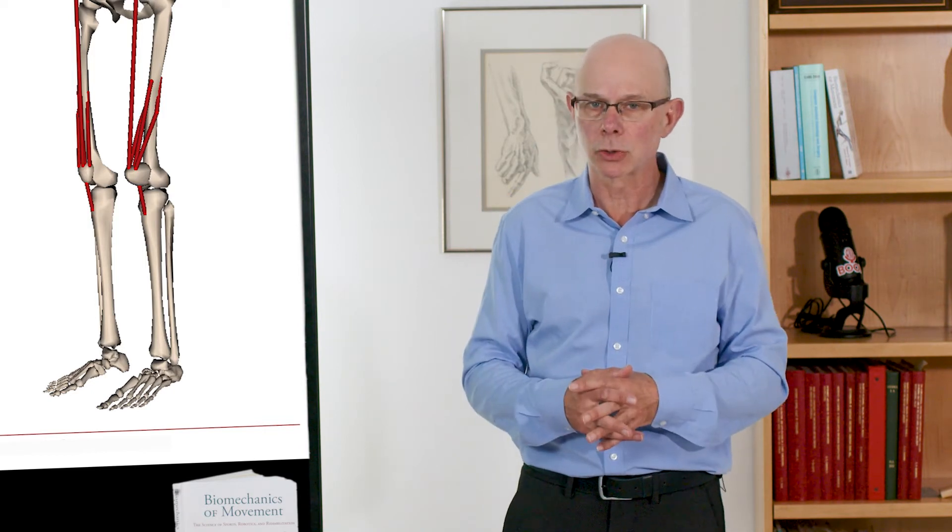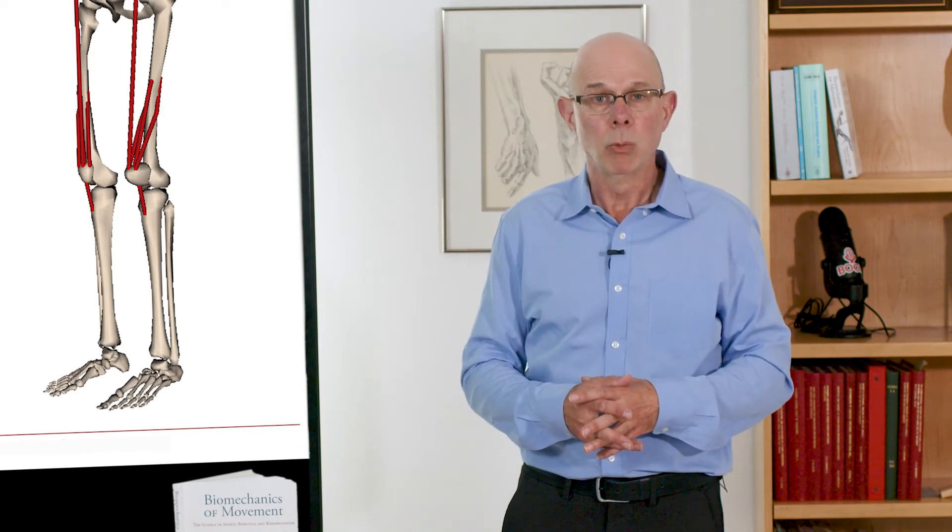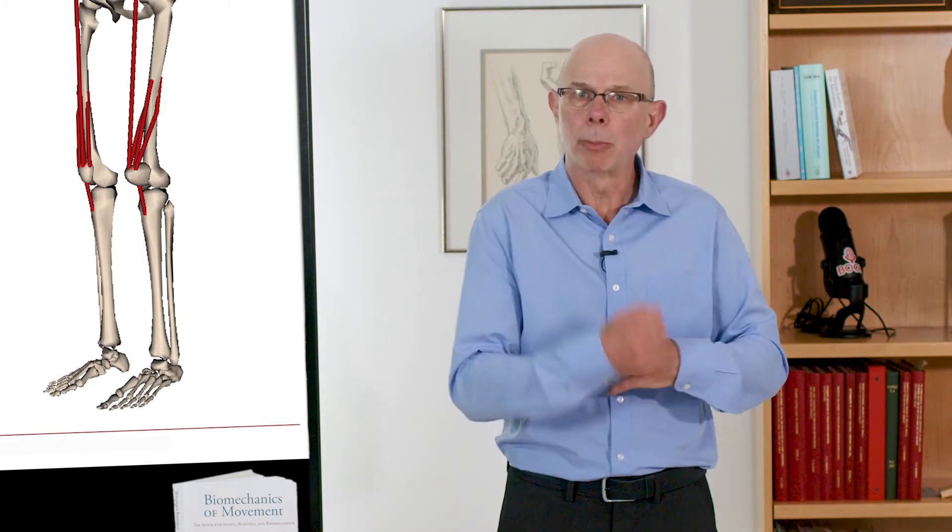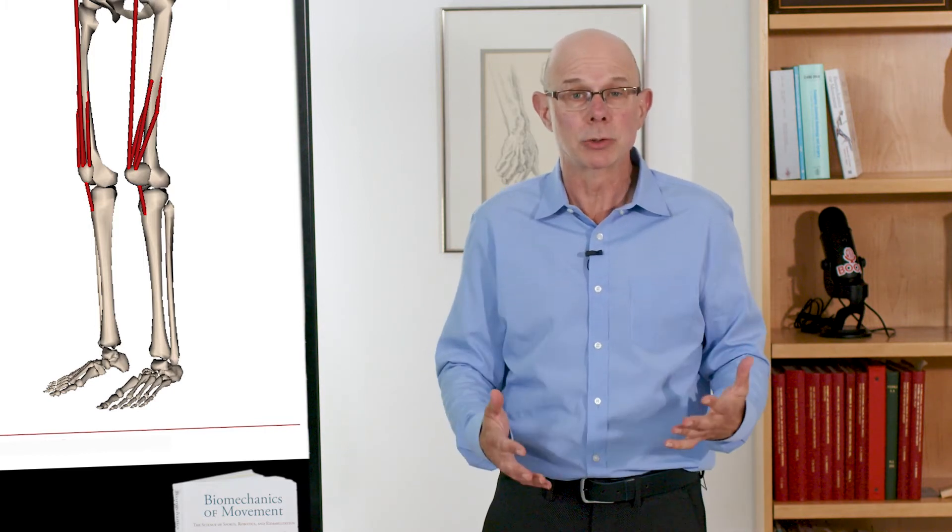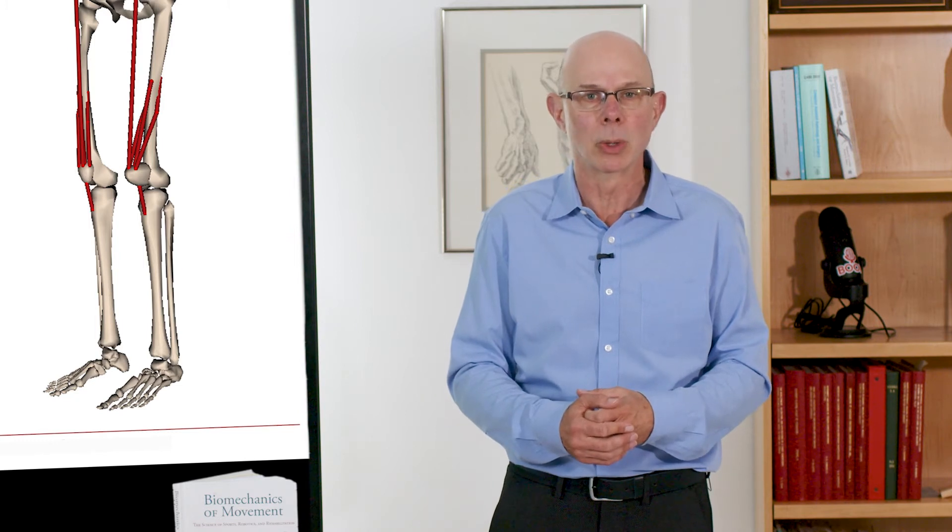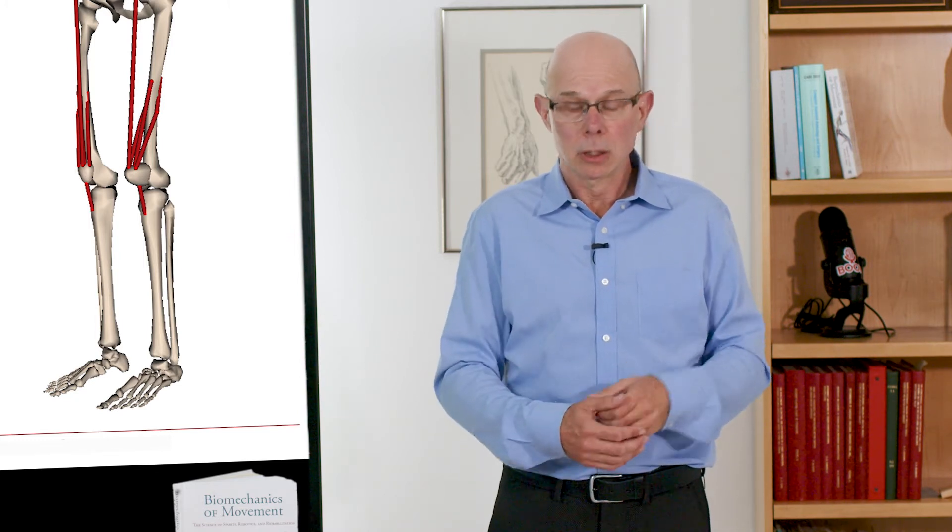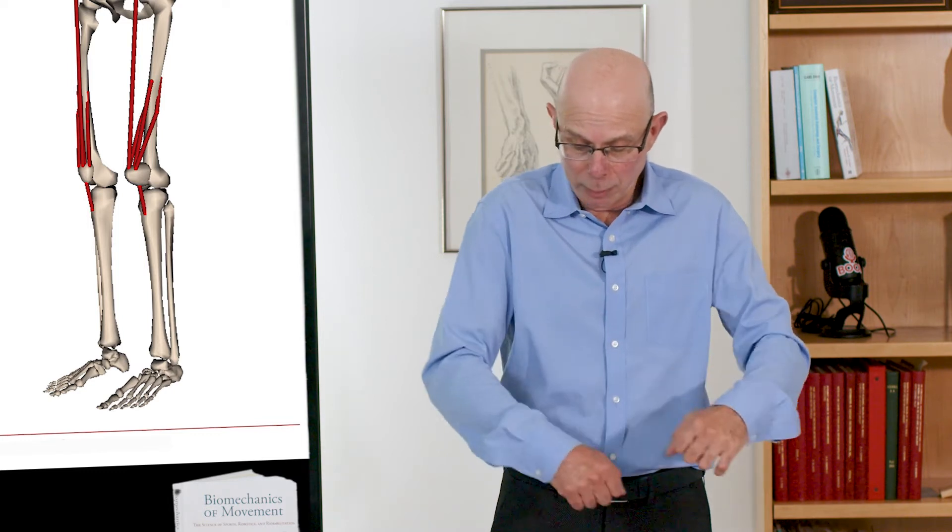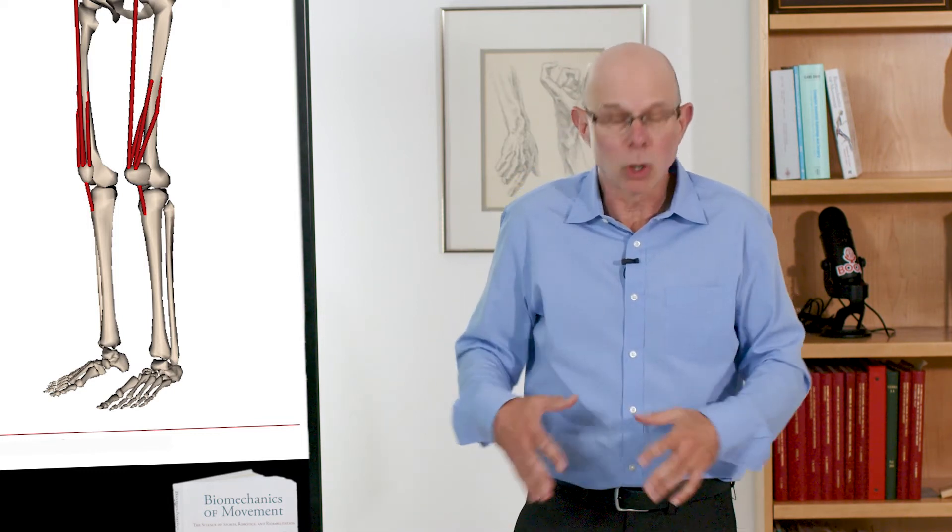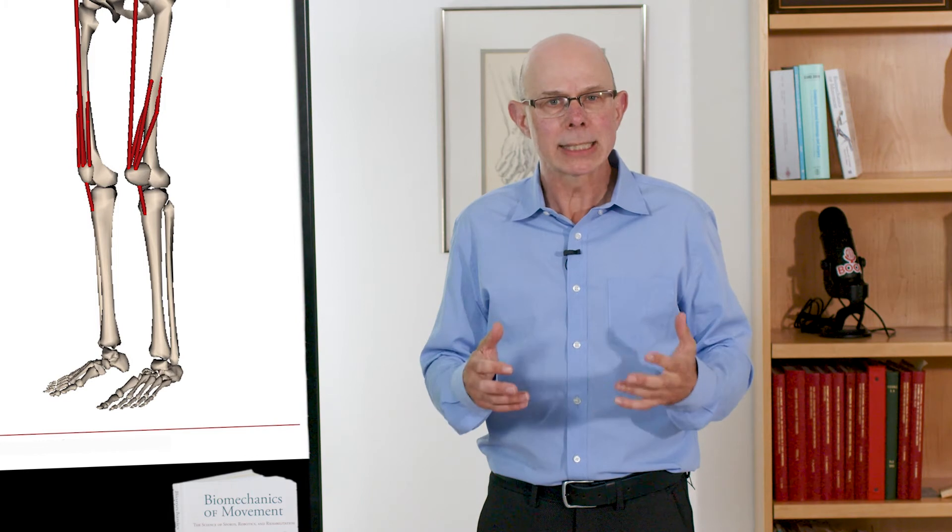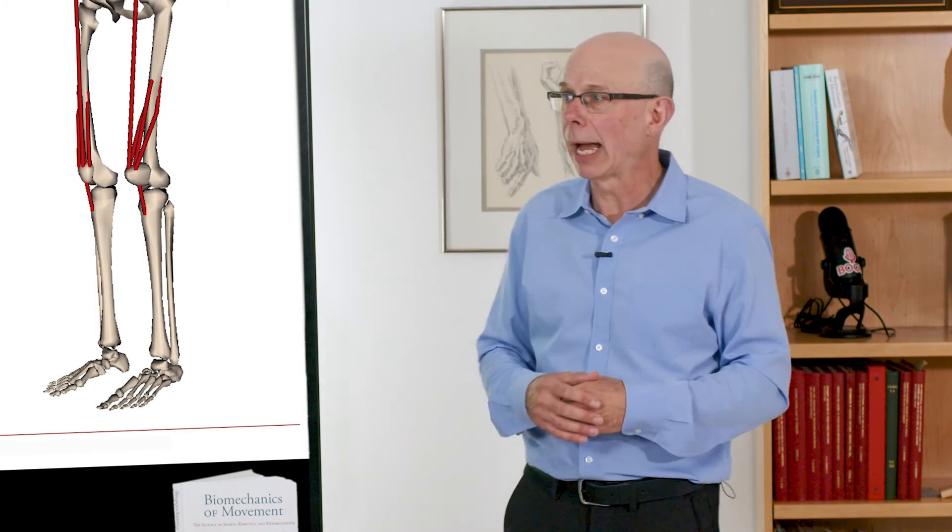What if instead we were built differently in a way that we had large moment arms? We could generate very large torques or moments about the joints with very little muscle forces. So we'd look kind of funny because we'd be webbed and have muscles crossing distant from the joints, but we're not. We're built with very small moment arms. So why is that? What's the advantage? We'll see that.